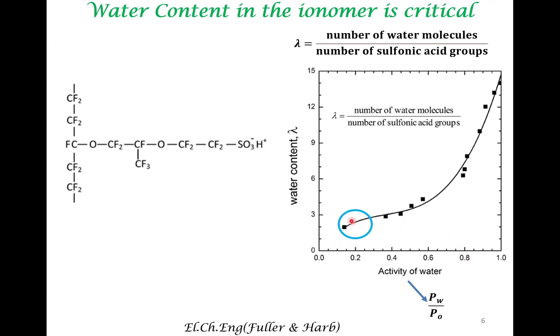So, the conductivity of proton is directly related to the water content. The conductivity can be fitted to this formula, wherein A and B are some constants, and conductivity is directly proportional to lambda. So, if you want to have a good conductivity in these ionomers, they have to be filled with sufficient amount of water.